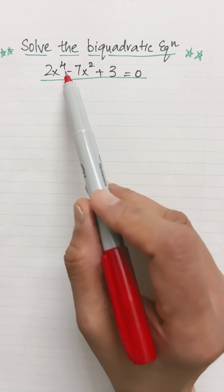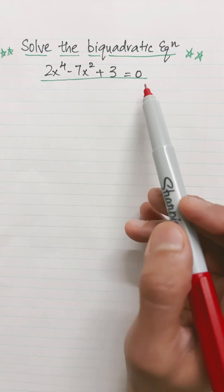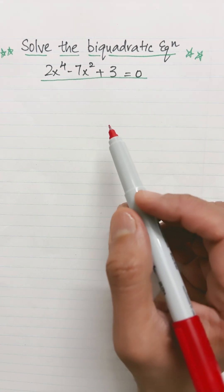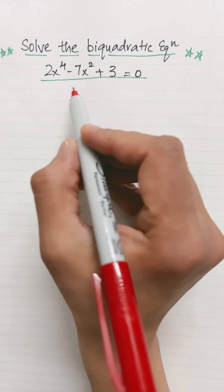Solve this equation: 2x to the exponent 4 minus 7x squared plus 3 equals 0. The degree of this equation is 4, so this is a bi-quadratic equation. How we will solve it: we will put x squared as some other variable.